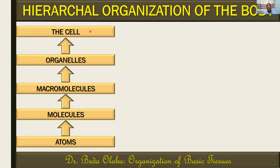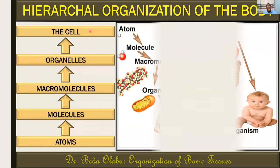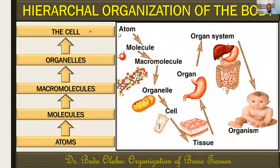There are several cells in the body. When we combine them into types, we still have several types of cells. We can, however, group these cells into tissues. Although these tissues can be grouped into four major classes, when tissues combine they form organs, when organs combine they form organ systems, and finally organ systems combine to form the organism.